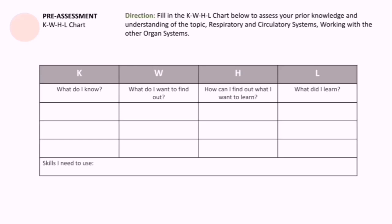For the H column, 'How can I find out what I want to learn?' — you basically have to think of a way to get that kind of knowledge and understanding that you have enlisted in the second column. And then later on, you will be furnishing the contents of the last column, which is 'What did I learn?' You may list any kind of skill you think is of utmost importance, such as critical thinking, being open-minded, resourcefulness — any skill that you think you may need.